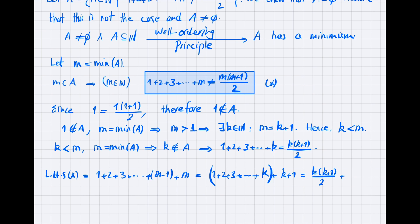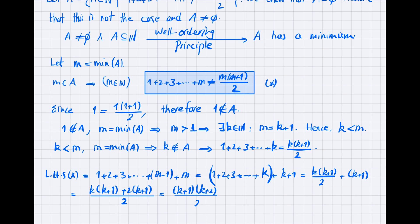So this becomes k(k+1)/2 + (k+1). Taking a common denominator gives k(k+1)/2 + 2(k+1)/2, then factoring out (k+1) leaves (k+1)(k+2)/2. Since k + 1 = m, this is m(m+1)/2 — exactly the right-hand side of the starred relation.